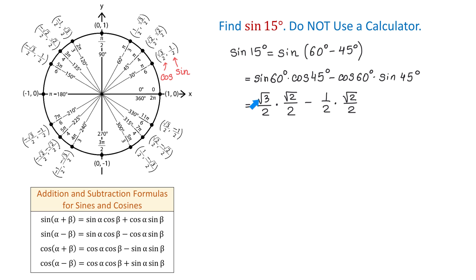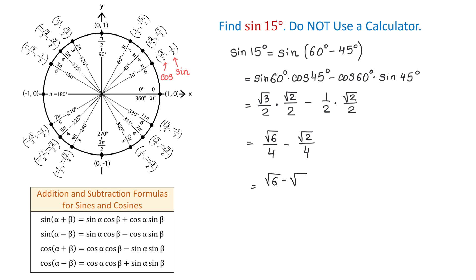Now, square root of 3 times square root of 2 is square root of 6 and 2 times 2 is 4. So we get square root of 6 over 4, and then we subtract square root of 2 over 4. We can also write this as square root of 6 minus square root of 2, all over 4.